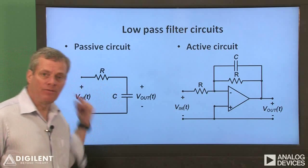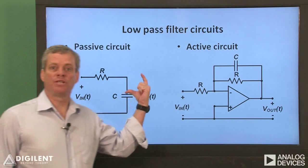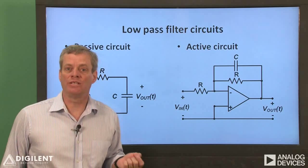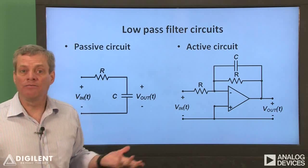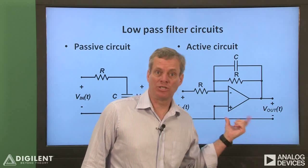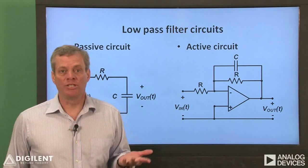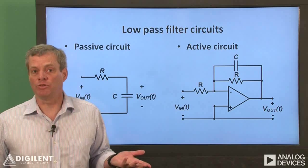Since the passive filter can't create energy, the output voltage must always be less than or equal to the input voltage. The active filter doesn't have this restriction. It's possible for the output voltage of an active filter to be significantly higher than the input voltage.